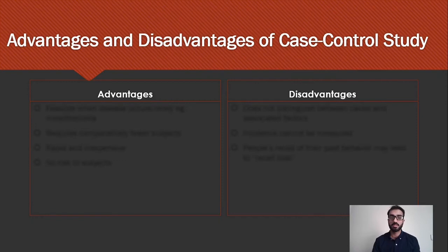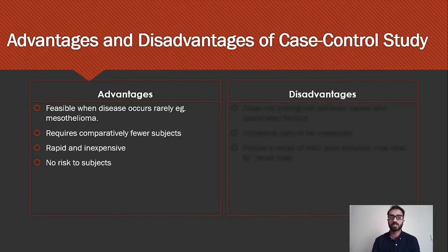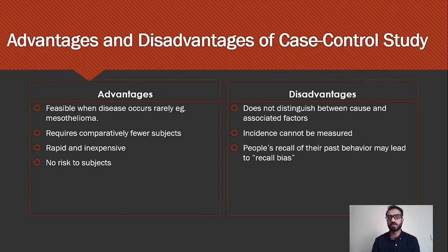The advantages and disadvantages of a case control study: the main advantage is that it can be used to study rare diseases, for example mesothelioma, and it requires comparatively fewer subjects compared to a cohort. There is no risk development to the subjects, and it is rapid and inexpensive. The disadvantage is that we cannot distinguish between the main cause factor or an associated factor. Since we are looking at the past, we cannot measure the incidence, and we rely on people's memory to recall their past, so there is a chance of recall bias.